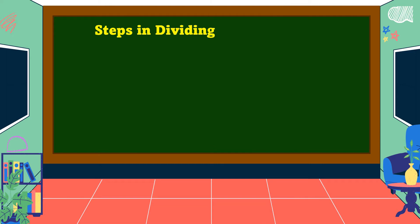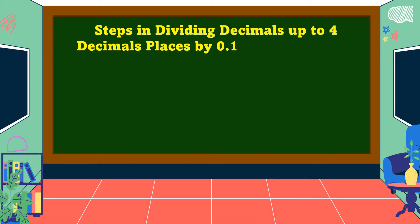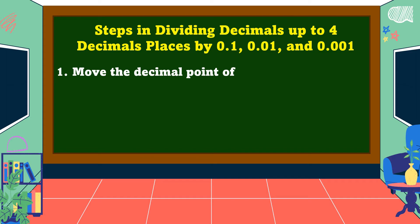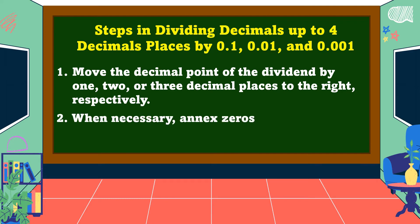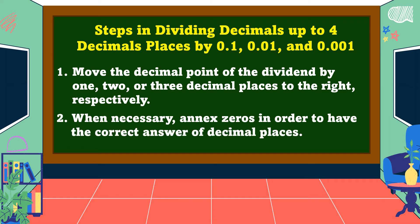These are the steps in dividing decimals up to four decimal places by one-tenth, one-hundredth, and one-thousandth. Number one, move the decimal points of the dividend by one, two, or three decimal places to the right respectively. Number two, when necessary, annex zeros in order to have the correct number of decimal places.